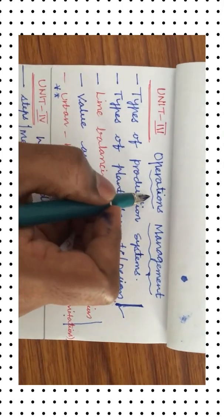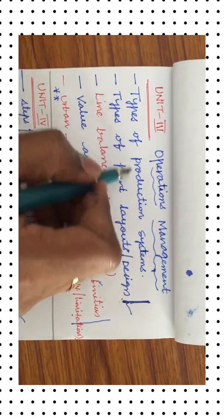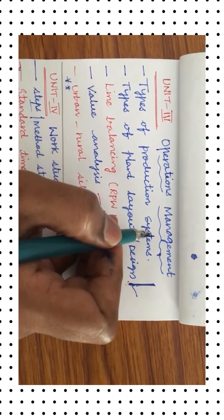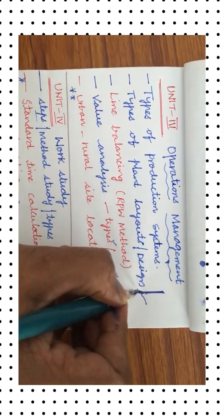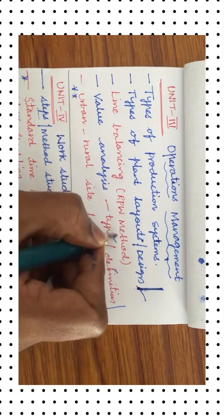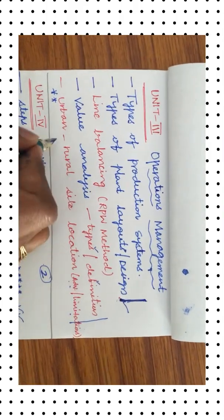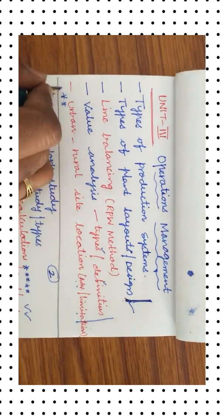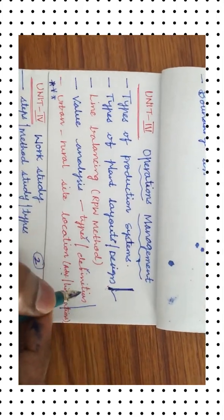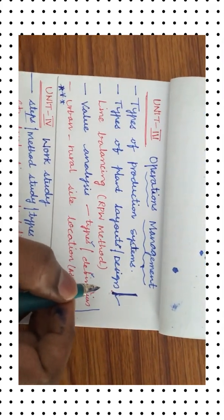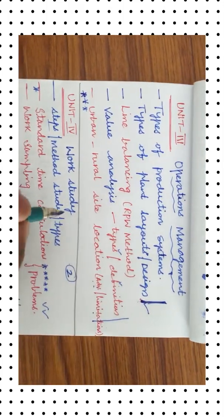Units 1, 2, and 3 are all about theoretical aspects. Unit 3 is all about operations management. Questions cover types of production systems — job shop, mass, and batch production — differences between them, and different types of layouts. From these you can expect one question from Unit 3. Also important are line balancing, the RPW method, value analysis with its types, definition, advantages and limitations, and plant/site location, which is a very important theory question. You can expect up to 2 questions from Unit 3.